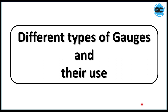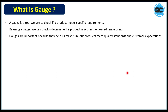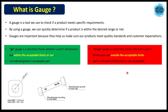Hello friends. In this video we will discuss the different types of gauges and their uses. Before starting, let's discuss what is meant by a gauge and why we use it while inspecting a product. A gauge is a tool we use to check if the product meets specific requirements or not.